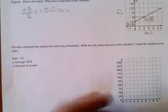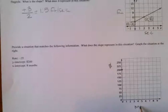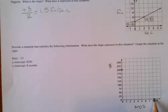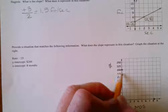Okay, we've got a y-intercept of $200, an x-intercept of eight months, and we're decreasing at a rate of negative 25 over one.